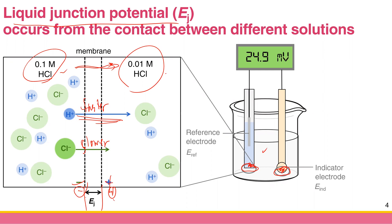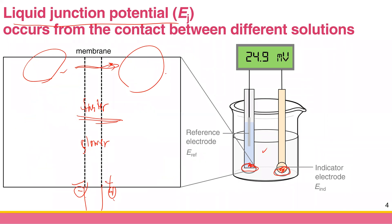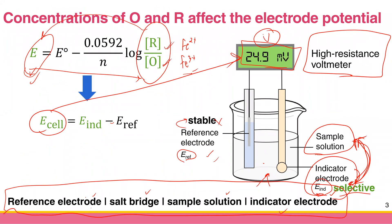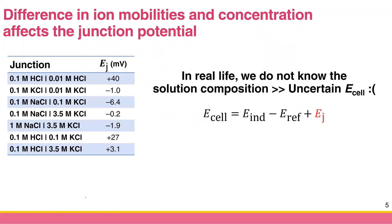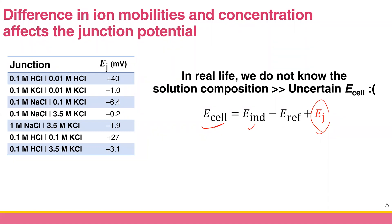Why do we care about this? We said before that the cell potential read by the voltmeter is equal to E_indicator minus E_reference. But now you have a junction potential, and in real life you cannot really calculate a junction potential. So your E_cell is uncertain — you cannot calculate it from theory anymore. We know E_indicator and E_reference is constant, but E_junction cannot be quantitatively determined, so your E_cell is essentially ruined.